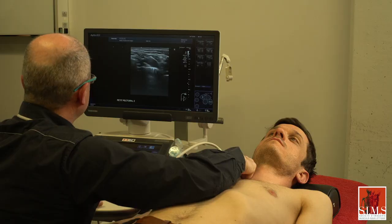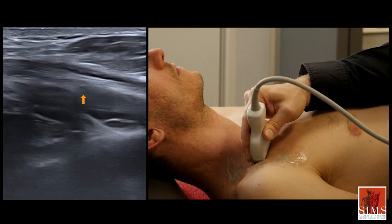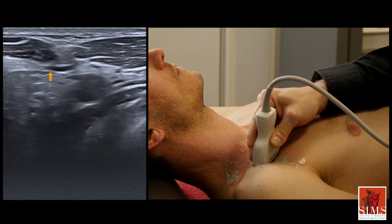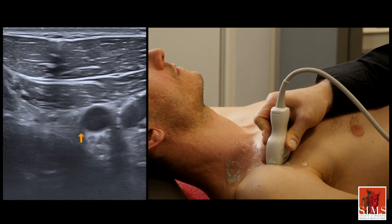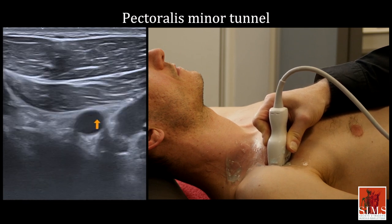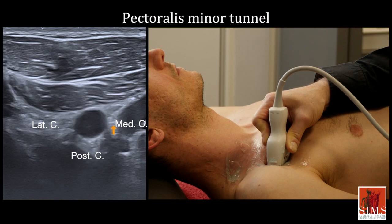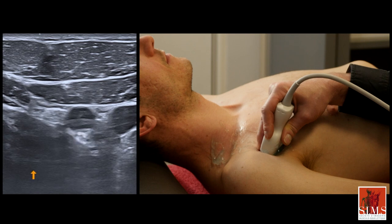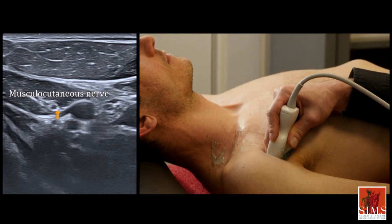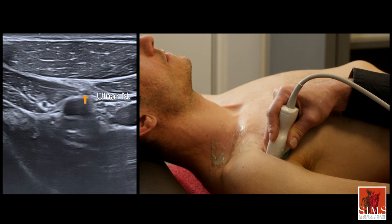We will now go on to the infraclavicular region. Here we follow our subclavian artery as it passes under the clavicle; an acoustic shadow prevents us from following it. We continue distally from the costoclavicular space, where the subclavian artery becomes the axillary artery. Descending further, we come to the area of the pectoralis minor tunnel, with the pectoralis major, the pectoralis minor, and the axillary artery. The cords are arranged according to their names: the lateral cord is lateral, the posterior cord is posterior, and the medial cord is medial. Below the pectoralis minor tunnel, the cords reorganize to give off terminal nerves. Notice the musculocutaneous nerve, which penetrates the coracobrachial muscle anterior to the axillary artery, the median nerve, the ulnar nerve which is medial, and the radial nerve the most posterior.